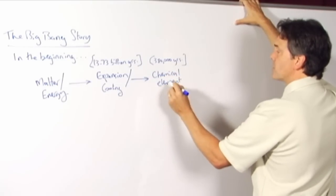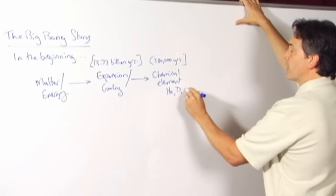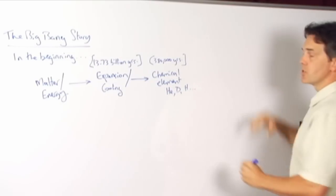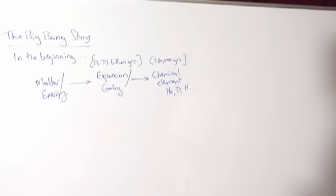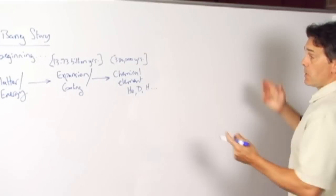The lightest of the elements then come into being, there's a formation of helium, deuterium, hydrogen, and so on, and then the elaboration of the chemical repertoire carries on.